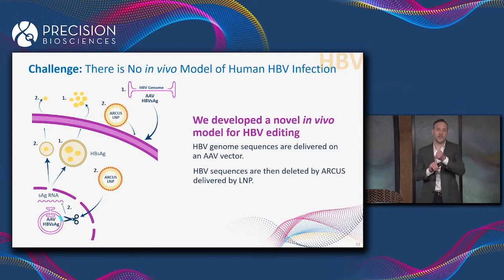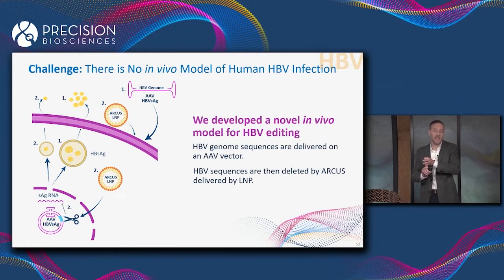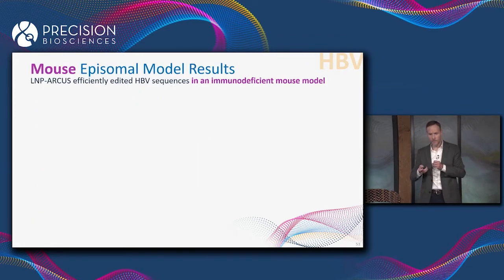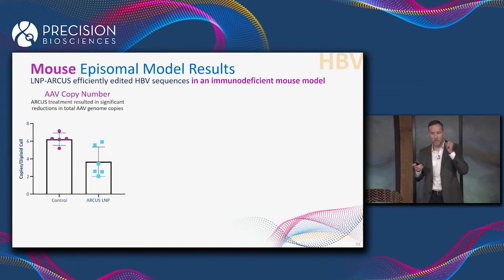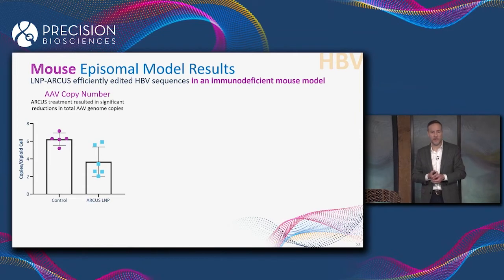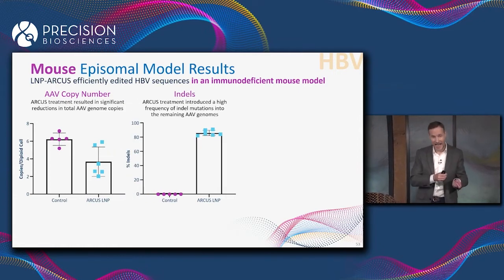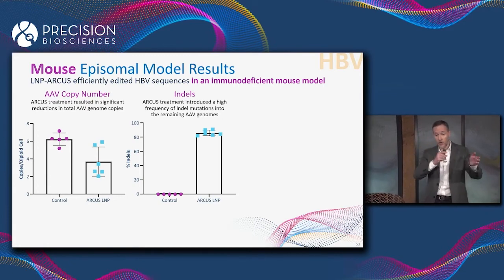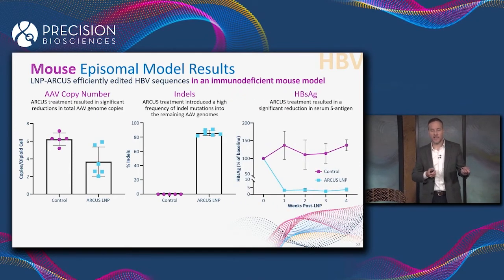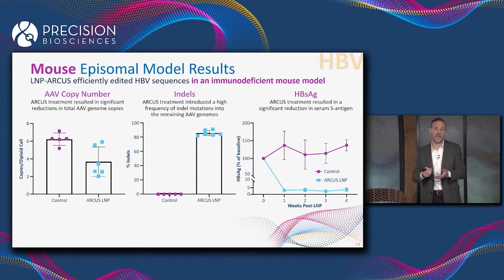We actually have three different biomarkers in this model: reduction in S antigen in circulation, reduction in total viral DNA, and the production of inactivating indel mutations in the virus open reading frames. In an immunodeficient mouse, animals treated with the Arcus LNP show a significant reduction in total viral DNA and introduction of a very significant number of inactivating indel mutations. Those two together then give very significant reductions in secreted S antigen — about a 95% reduction in S antigen production. A very nice animal model and a very good demonstration of LNP delivery of Arcus.